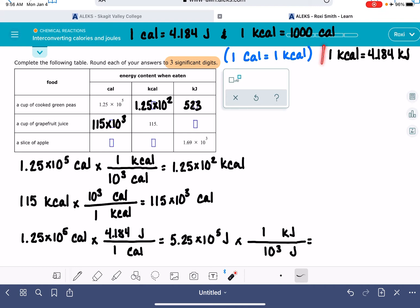So using this is going to make the conversion factor a little bit faster. So let's apply that to the grapefruit juice, 115 kcal, and convert that into kilojoules. Kcal down on the bottom, 4.184 kilojoules up top. And that gives me 481 kilojoules.